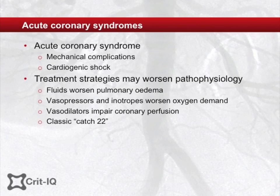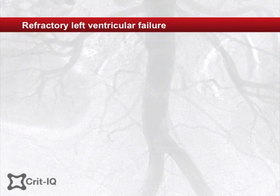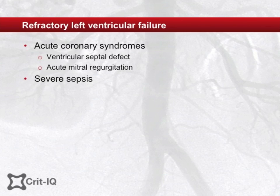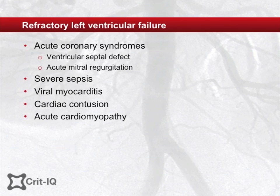Early establishment of the counterpulsation is necessary as it serves as a cardiac assist device and can only support already existing cardiac function. Refractory ventricular failure may develop during acute myocardial infarction, secondary to mechanical complications such as ventricular septal defect or acute mitral regurgitation, or secondary to causes other than acute MI — for example, sepsis from any cause, viral myocarditis, blunt cardiac injury or contusion, or cardiomyopathy.